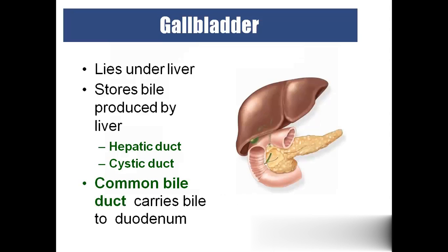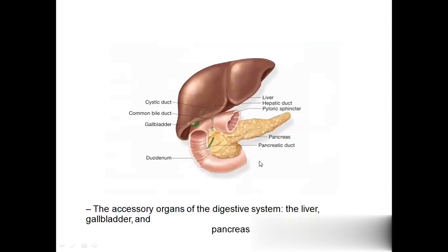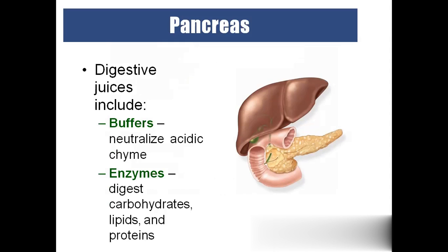The gallbladder stores bile; when bile is needed it travels through the bile duct into the duodenum. The pancreas sits in the C-curve of the duodenum and produces digestive enzymes that digest carbohydrates, lipids, and fats. The pancreatic secretion is alkaline and neutralizes the acidic chyme coming from the stomach.